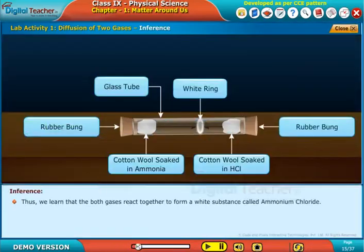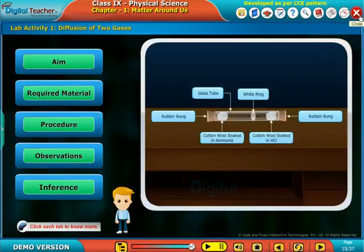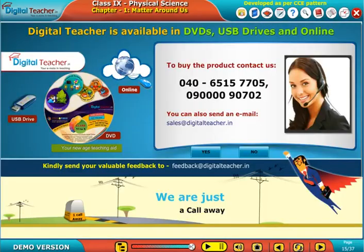Thus we learn that both gases react together to form a white substance called ammonium chloride. Therefore, we can conclude that HCl is more dense than NH3, because NH3 travels a farther distance than the HCl in the same period of time.